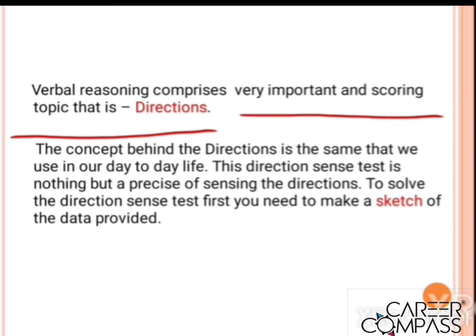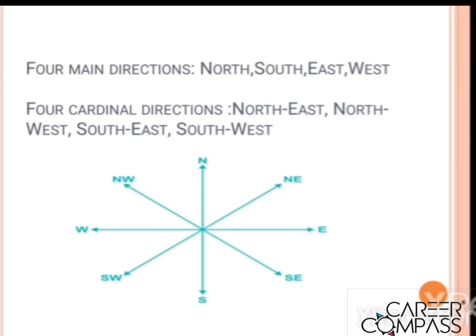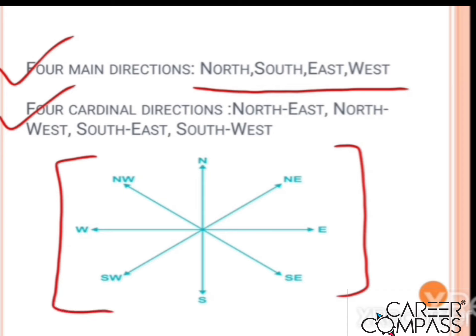You just have to make a sketch of the data provided by the examiner on your sheet so that you can clarify specific information and give the answer. There are four main directions and four cardinal directions. The main directions are North, South, East, and West. The cardinal directions are North-East, North-West, South-East, and South-West.